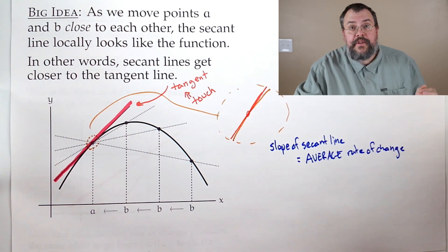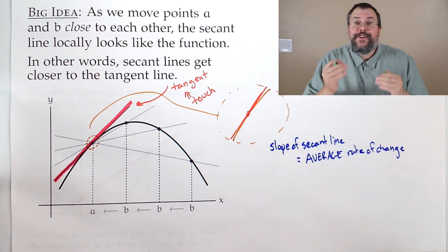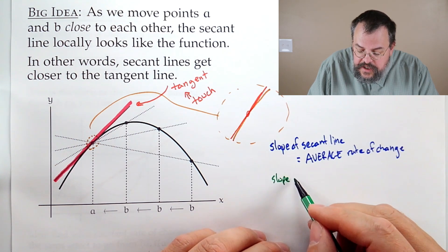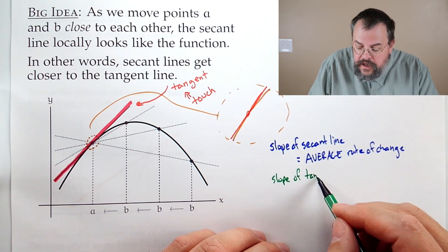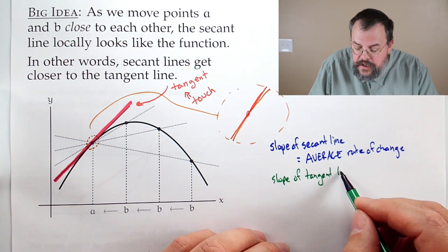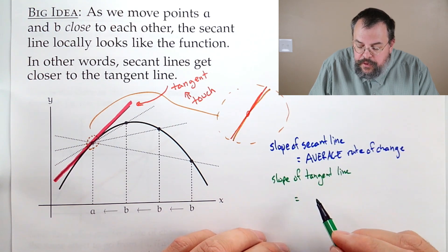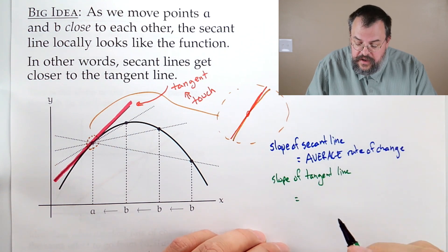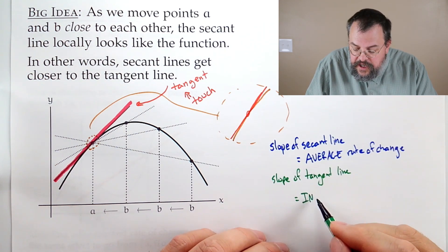Now, on the other hand, when we talk about the slope of the tangent line, what's that? Well, the tangent line, it's mimicking the function. So what the tangent line does is it's saying, not just what's the average rate of change, but what's happening at that point. Or if you like, what's happening at that instant.